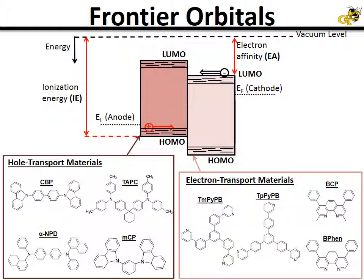Here's an example of an energy diagram that can be drawn for organic semiconducting materials. We draw these with HOMO bands and LUMO bands. HOMO stands for highest occupied molecular orbitals, and LUMO stands for lowest unoccupied molecular orbitals. Holes are transported through the HOMO states within the HOMO band, and electrons are transported within the LUMO states of the LUMO band. Also shown are the quantities of electron affinity — the difference in energy between the vacuum level and the LUMO level — and the ionization energy, which is the difference between the vacuum level and the HOMO level. At the bottom of the slide, there are example hole and electron transport materials to give an idea of the chemical diagrams of these materials.